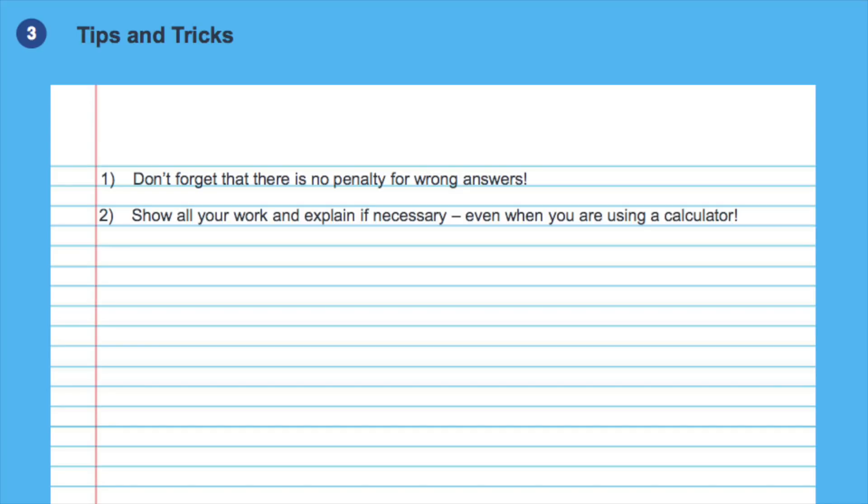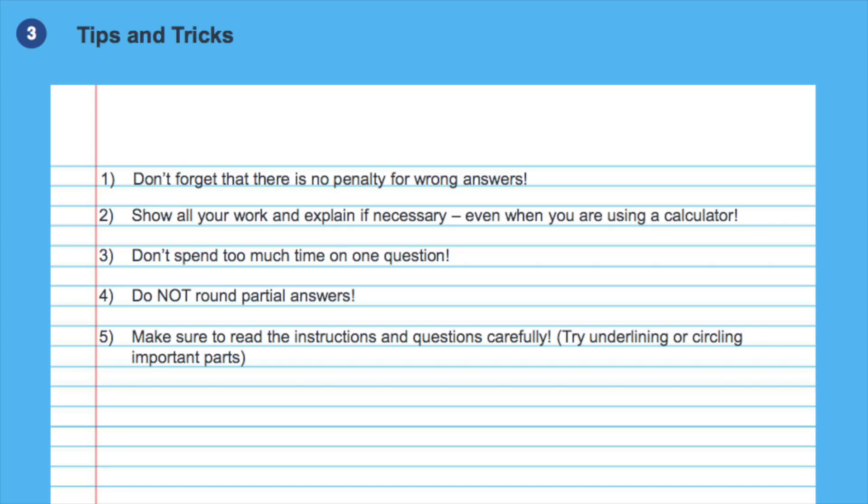Now, some things you should be paying attention during the exam. Don't forget that there is no penalty for wrong answers. Show all your work and explain if necessary, even when you are using a calculator. Don't spend too much time on one question and do not round partial answers as they might affect the results in the next sections. Make sure to read the instructions and questions carefully. Underlining or circling important parts might help. Don't forget to put the units next to your answers due to necessary conversions when needed. You should check the approved models for calculators from the AP manual and make sure your calculator is on the list of approved models before the exam date. Make sure you are comfortable with the properties of your calculator and that you have enough battery for the duration of the exam.